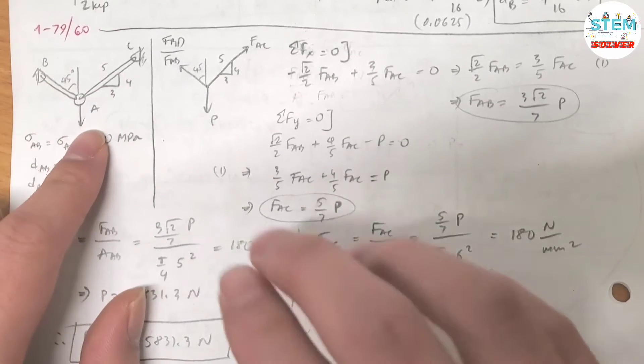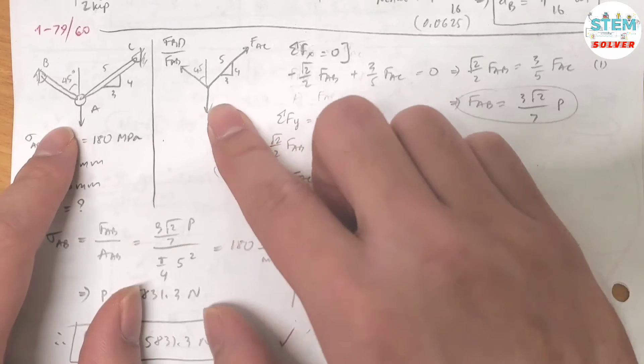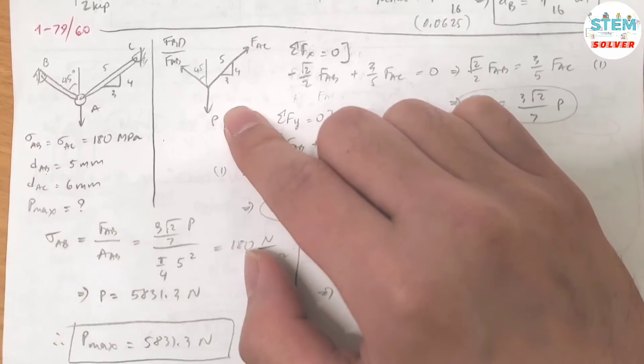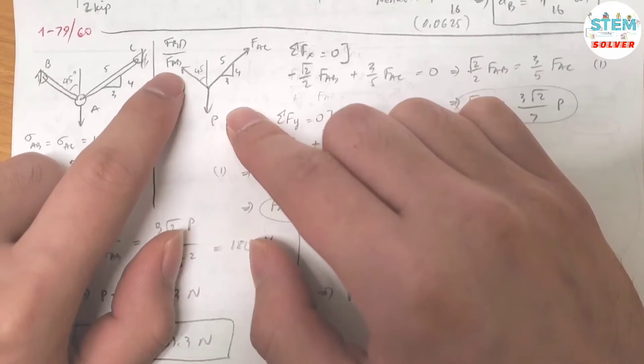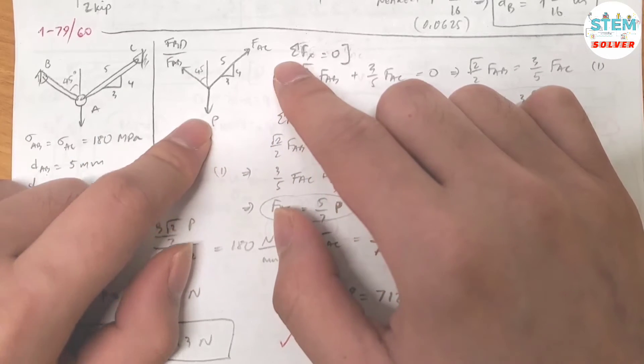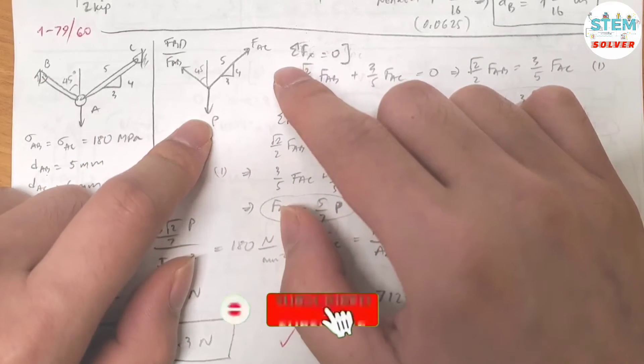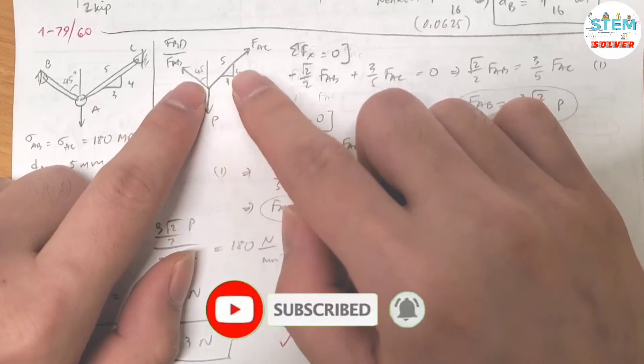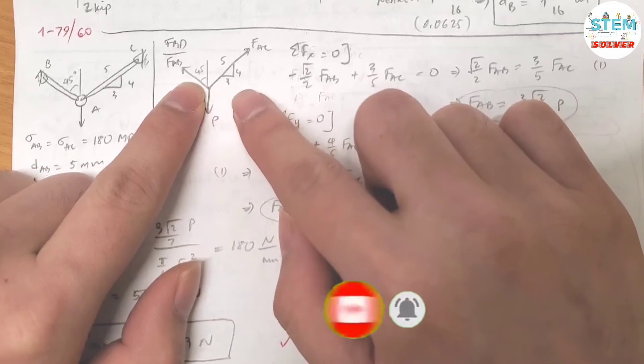So here is the figure and here is my free body diagram for it. You have FAB to the left, FAC to the right, and the force P pulling down. This angle is 45 degrees and over here you have a ratio of 3-4-5.